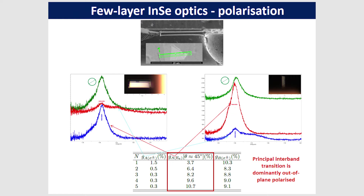To observe out-of-plane polarized transitions in few-layer flakes, an approach is to cut out small lamellae and rotate them so you can see the flake edges and detect photons emitted from them. Photoluminescence spectra for six-layer crystals show the strongest response for out-of-plane excitation, as expected. Rotating the crystal while keeping the light polarization fixed confirms that the principal interband transition is out-of-plane polarized.